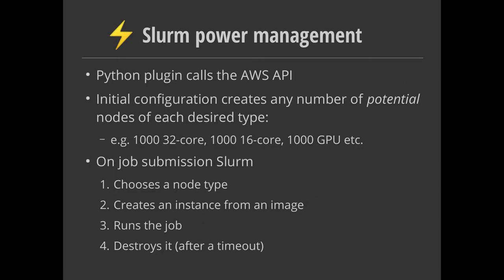The way it works behind the scenes — and this is why I've explicitly mentioned that it is a Slurm cluster — is that it uses the Slurm Power Management API. For each of the cloud platforms, we have a Python plugin which calls the appropriate parts of the API. It says: turn on this node of this type, connect it to this subnet, and allow work to run on it. All you have to do in advance is tell it how many potential nodes of each type you want to have.